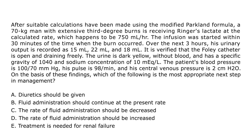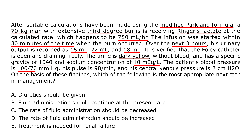Next question: After calculations using the modified Parkland formula, a 70 kg man with extensive burns is receiving Ringer's lactate at 750 mLs per hour, infusion started within 30 minutes of the burn. Over the next 3 hours, urinary output is recorded as 15, 22, and 18 mLs. The Foley catheter is draining freely. Urine is dark yellow without blood, specific gravity is 1040, sodium concentration is 10. Blood pressure is 100/70, pulse is 98, and CVP is 2. What is the most appropriate next step?